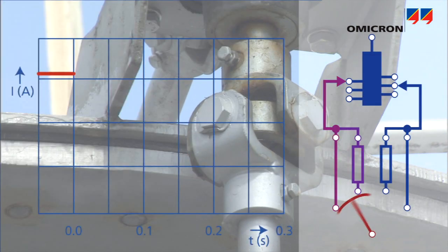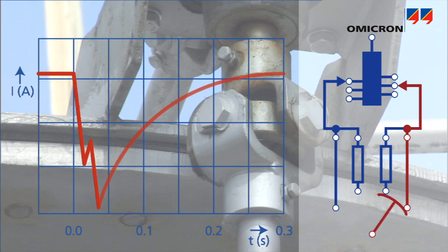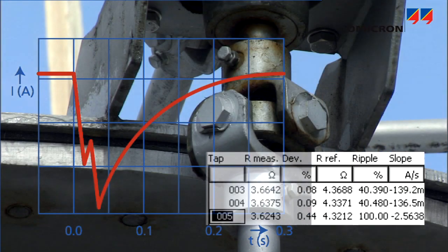When switching from one tap position to another, the tap changer's intermediate position via the commutating resistors make the DC current drop temporarily. The CPC measures the size and the slope of this current drop.